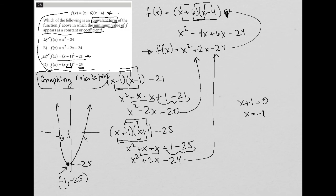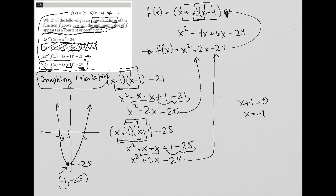So choice D is the best answer, although many students will choose B. On this test, if all they wanted was an equivalent form, the minimum value condition wouldn't be there. Just finding something equivalent doesn't mean you're finished — B is almost good, but it's not the correct answer. Keep in mind you're allowed to use a graphing calculator, and seeing 'minimum value' is a good sign it may come in handy.